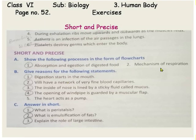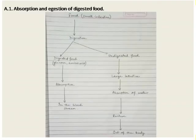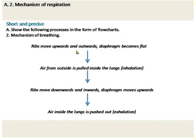Mechanism of respiration. Let us see how we can show the mechanism of respiration in the form of a flowchart. First, the ribs move upward and outwards, and the diaphragm becomes flat. After that, air from outside is pulled inside the lungs.